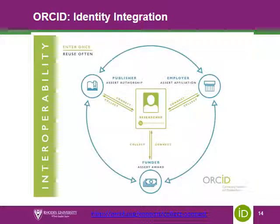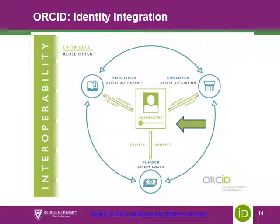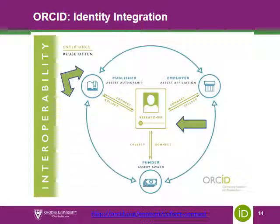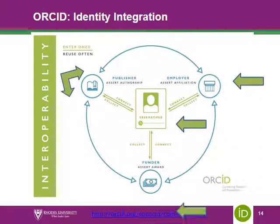This tutorial has shown you why researchers should build their online researcher profiles and how to build them. In brief, ORCID interoperability works as follows: researchers submit articles to publishers, who now require researchers to also submit their ORCID number. Once the publisher publishes the article, they share that information via the ORCID number to the employer and to the funder. This is how the ORCID principle of 'enter once, reuse often' is applied.